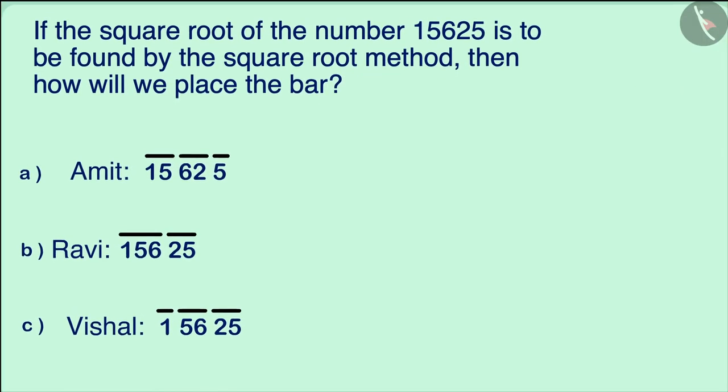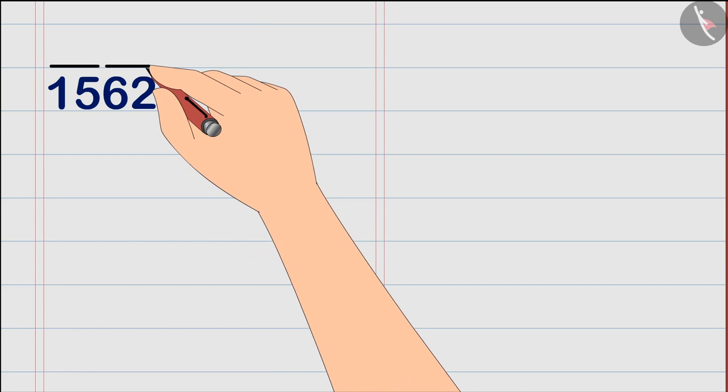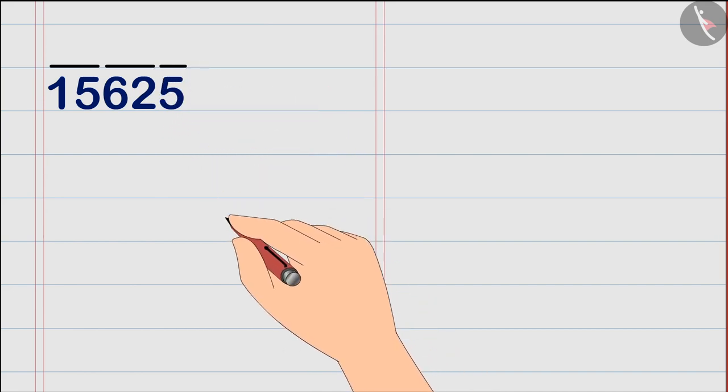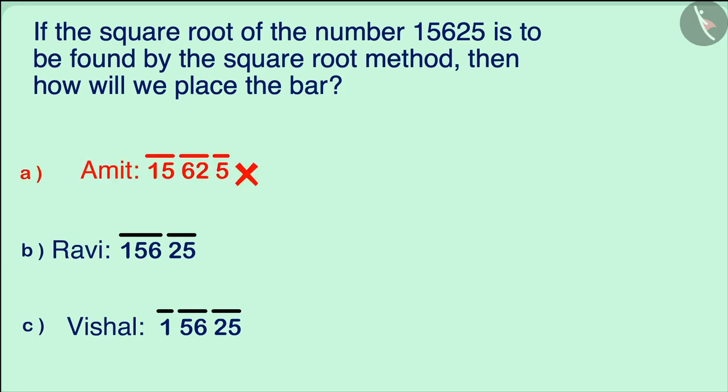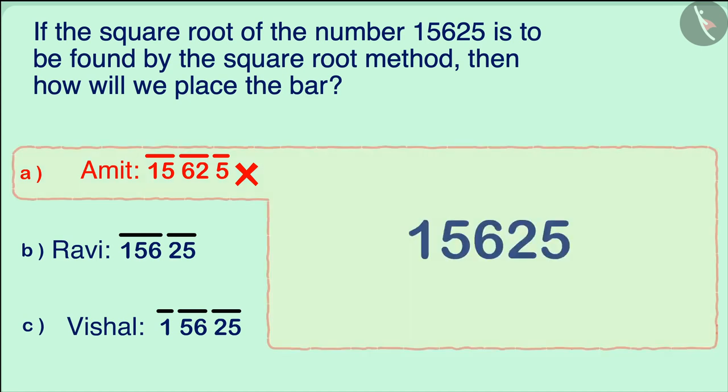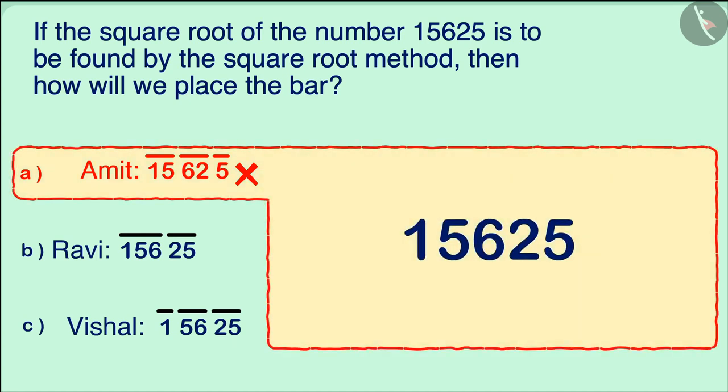Many children accept Amit's answer as correct. They place bars by pairing digits from left to right, but this is wrong. The correct method is that in order to make a pair of whole numbers, we always have to start from the units place, that is from the right side, and then pair them with the digits on the left side.